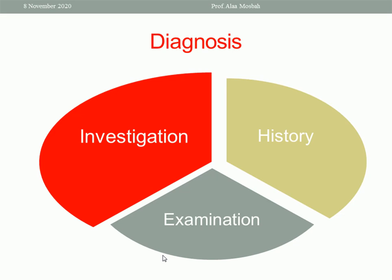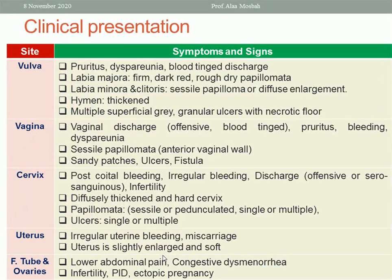What about the clinical presentation? According to the site of the lesion: if it is in the vulva, the lady will complain of pruritus and purulent discharge. The labia majora may be dark red, firm, and rough, and may have papillomata. The labia minora and the clitoris may have papilloma or diffuse enlargement. The hymen is thickened. There may be multiple superficial gray granular ulcers with a necrotic floor.